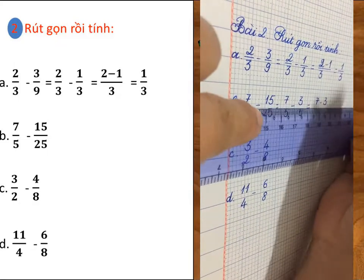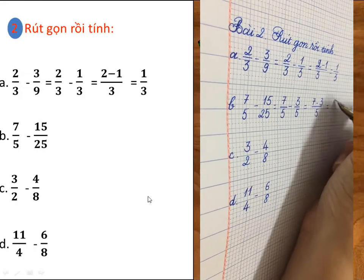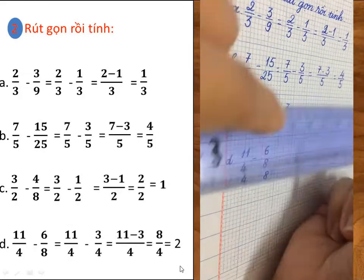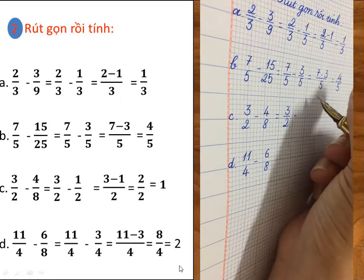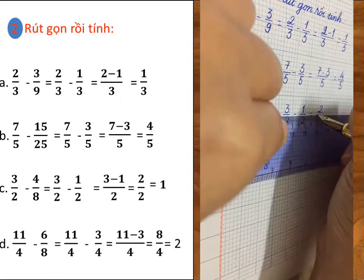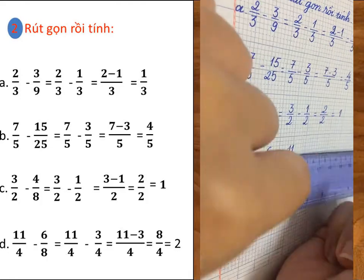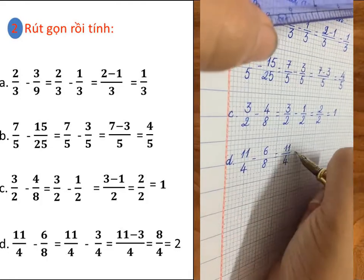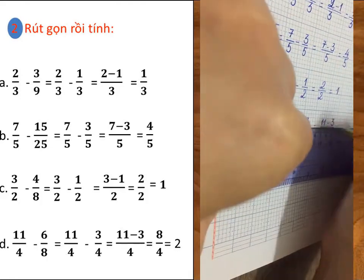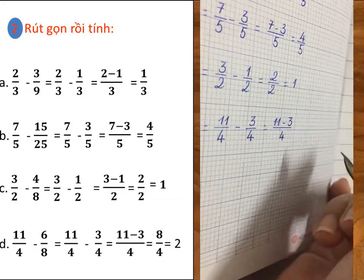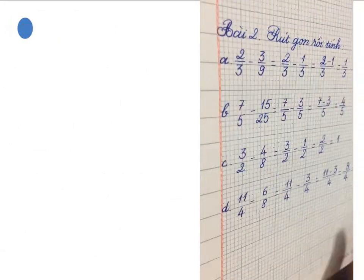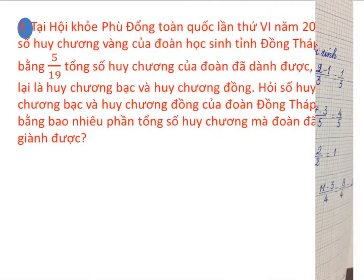Các em hãy đối chiếu bài làm của mình với kết quả của cô. Vậy là qua 2 bài tập 1 và 2, cô tin chắc rằng các em đã thành thạo trong thực hiện phép trừ 2 phân số cùng mẫu. Để áp dụng vào trong giải toán, chúng ta cùng giải quyết bài tập 3.